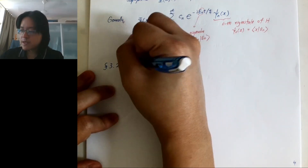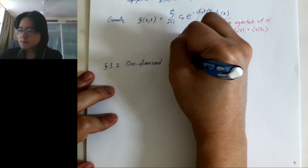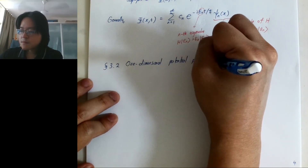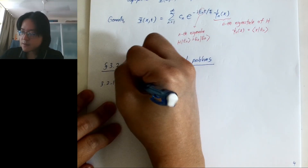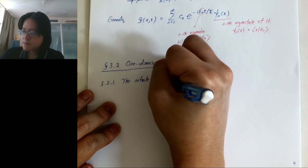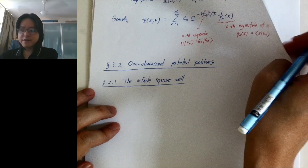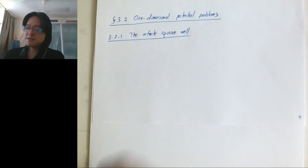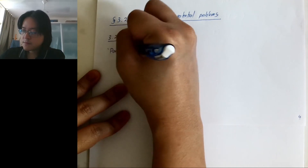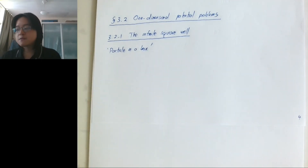Now we move to what you may have seen before in modern physics or high school: the one-dimensional infinite potential well, also called particle in a box. This is the main topic of this section of Chapter 3.